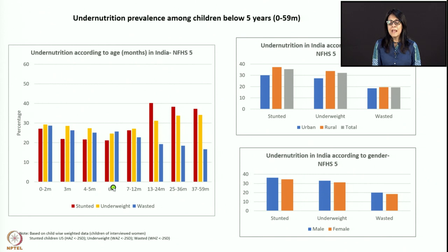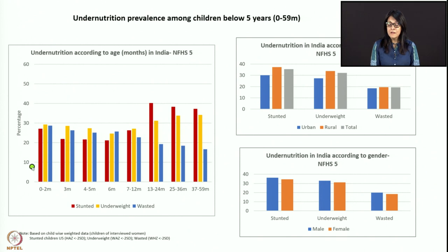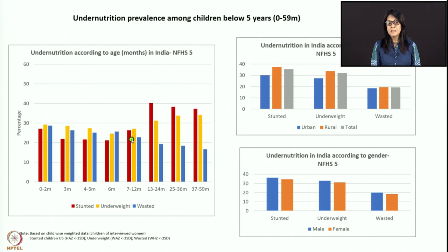Up to six months is all breastfeeding — nothing else. So of course milk transfer is a problem. Many mothers are giving cow's milk and babies are getting diarrhea. Starting from seven to twelve months, this is where complementary feeding is introduced, and the mother is learning how to introduce it, how to increase dietary diversity, frequency, and quantity.